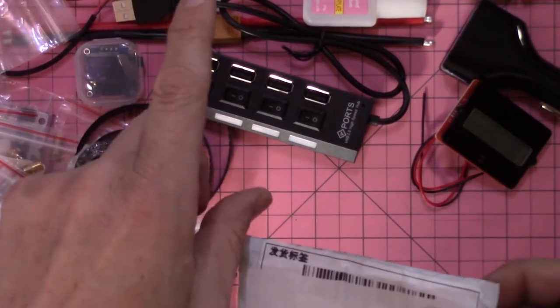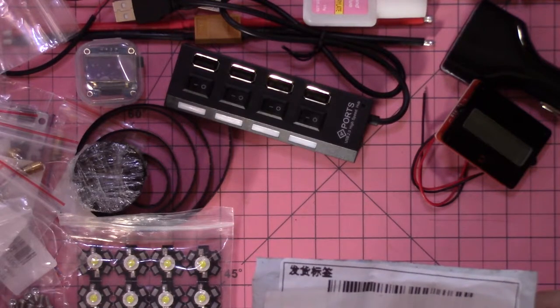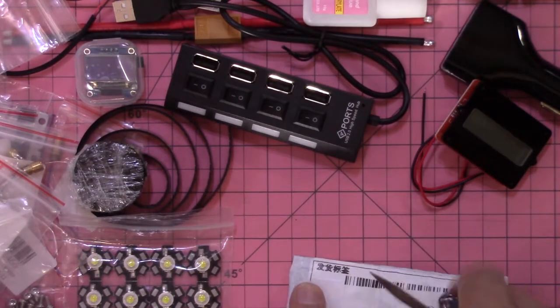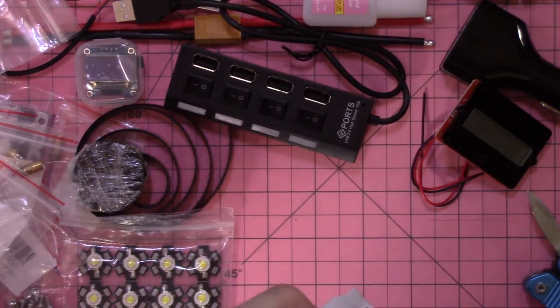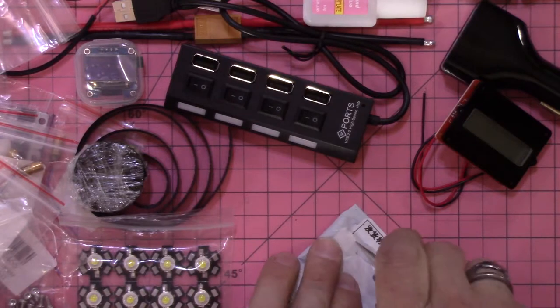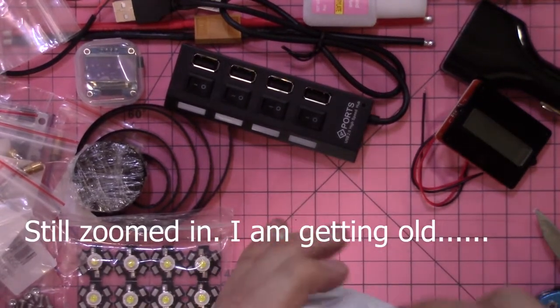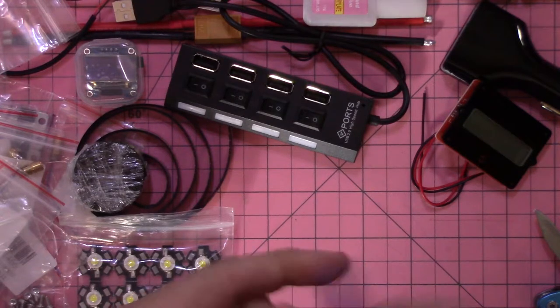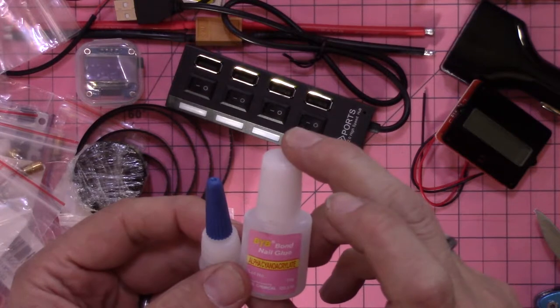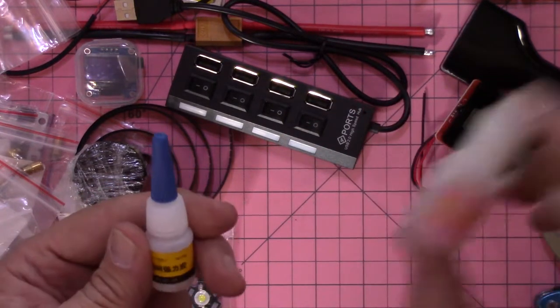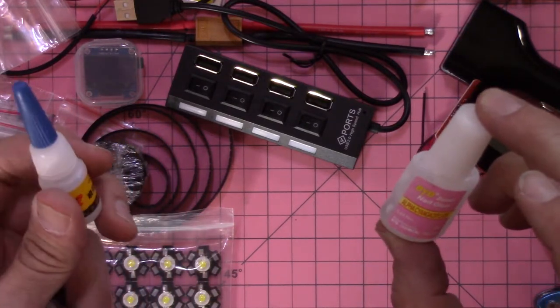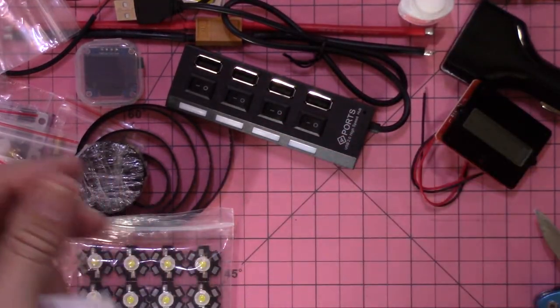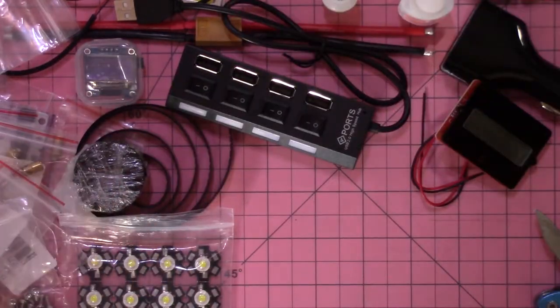This one is labeled Z317. I wonder if customs ever looks at this stuff. This is cyanoacrylate, this is just regular super glue. This is the UV glue. Well they both came at the same time.